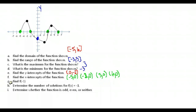Next we're asked to find f(-3). So when x is negative three, what would be the y value? You go to where x is negative three on your graph, go up to the graph at that point, and that point is (-3, 3). So when x is negative three, the y value is positive three — f(-3) equals three.